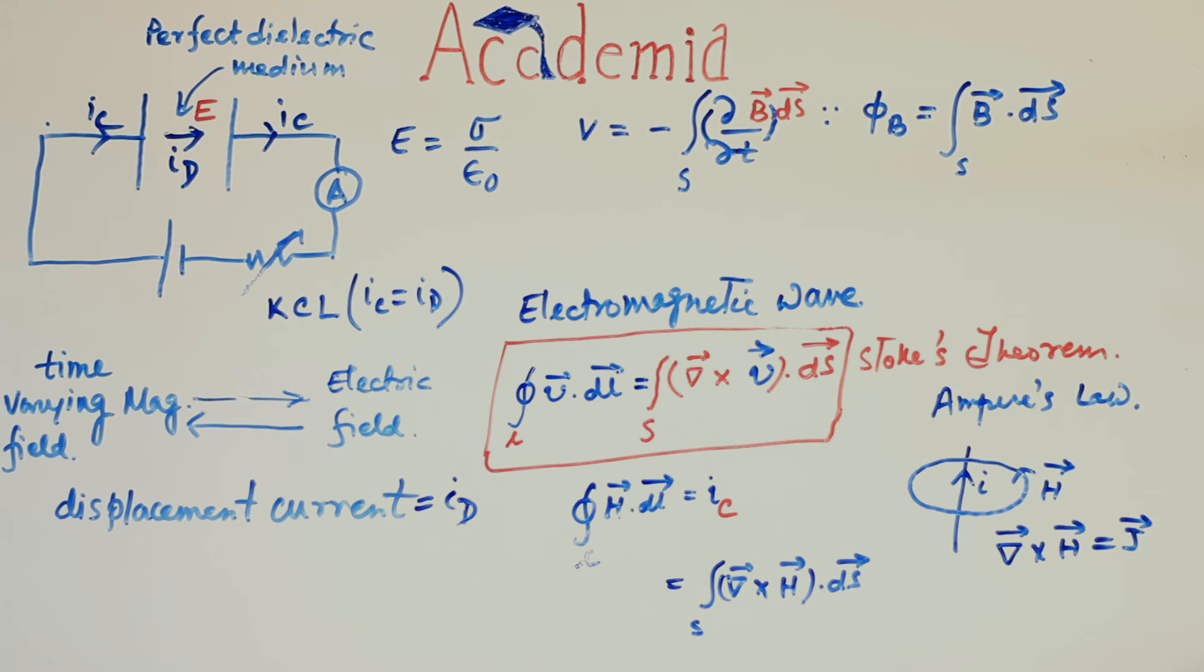We already know V is equal to closed line integration of E dot dL. By Stokes theorem, this closed line integration of E dot dL can be written as the surface integration of curl of E. So by comparing, curl of E is equal to minus del B del T.